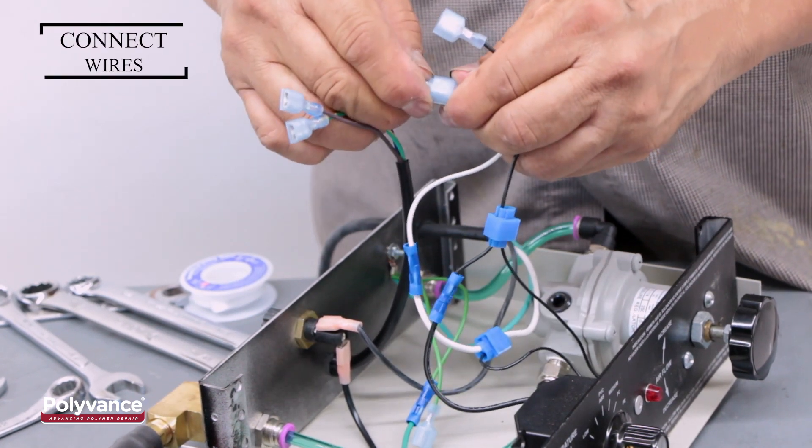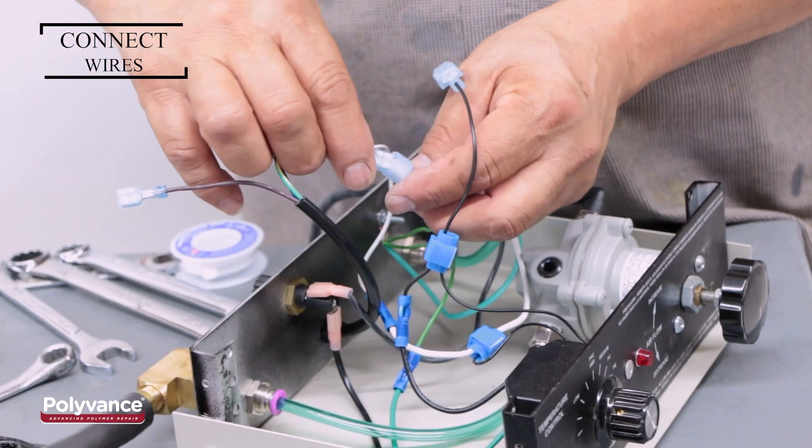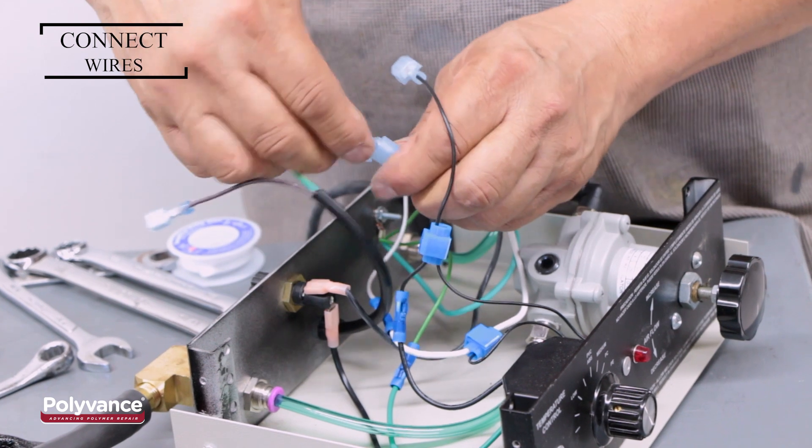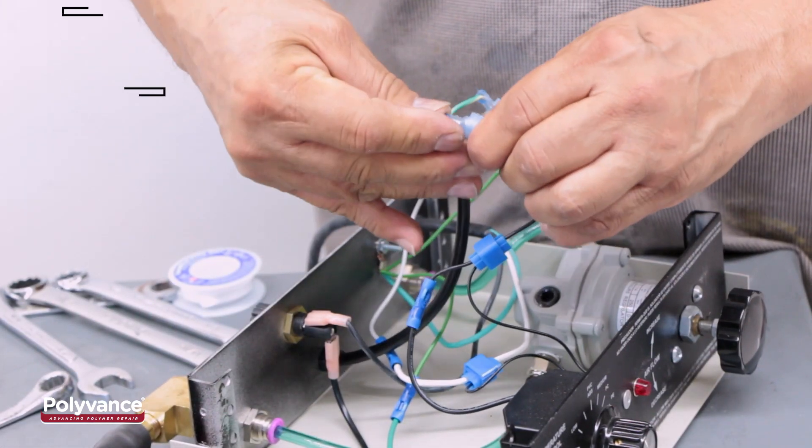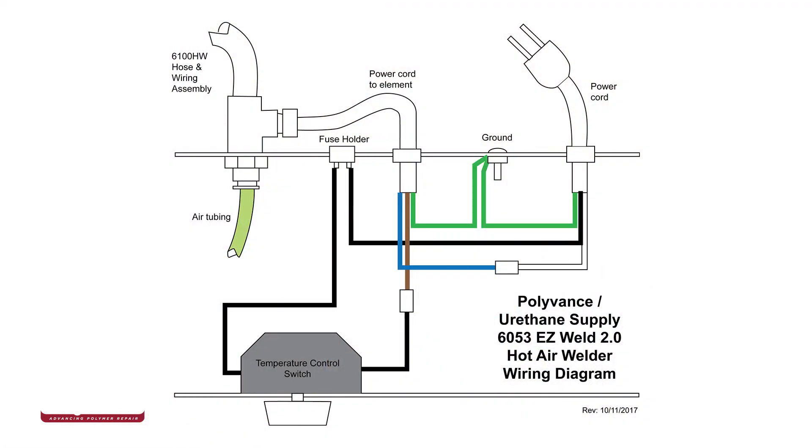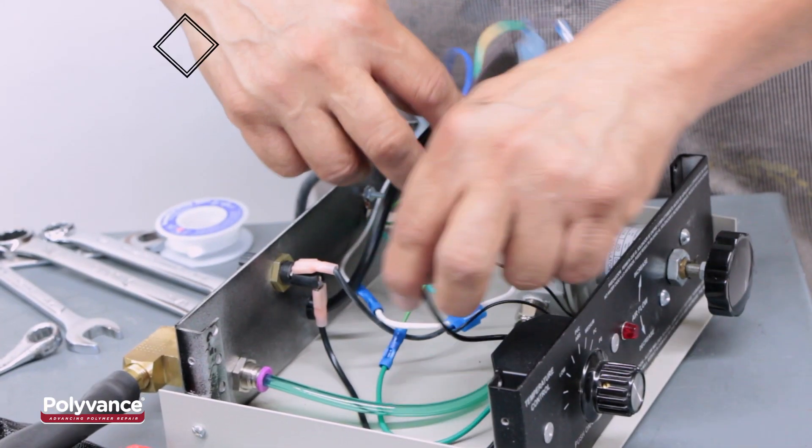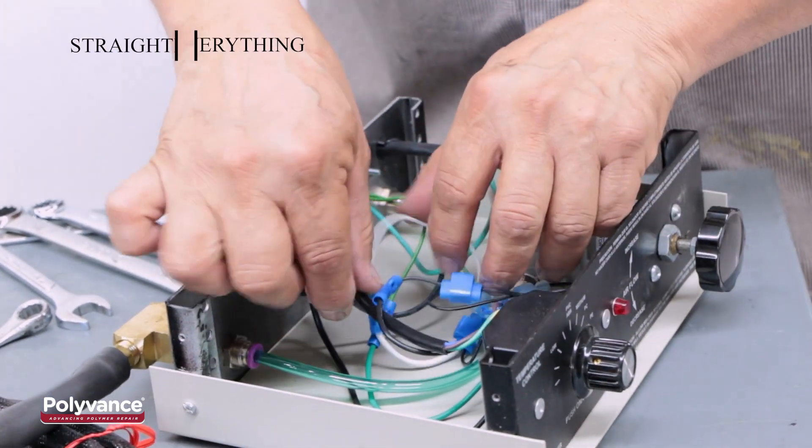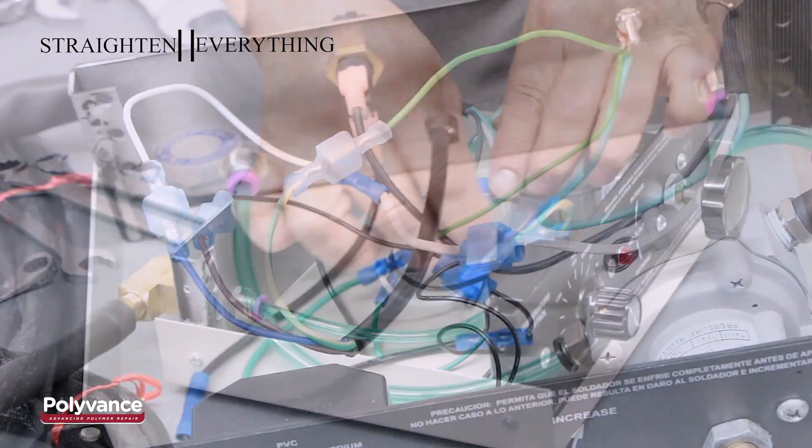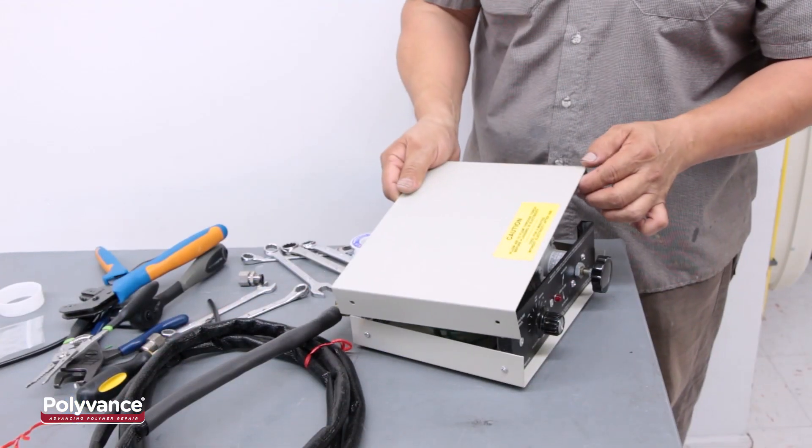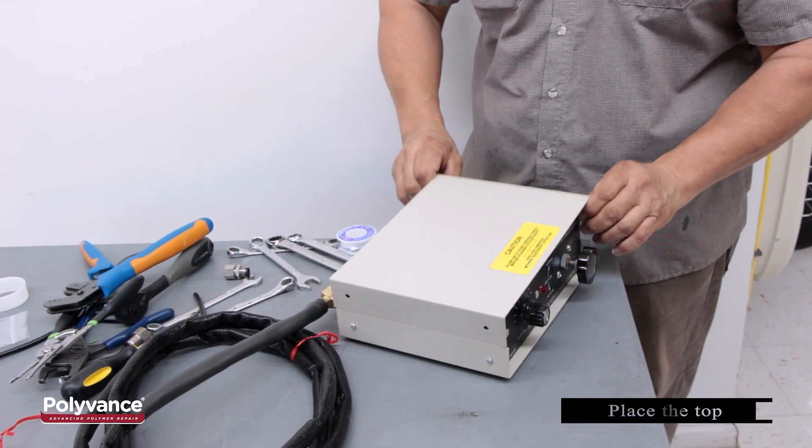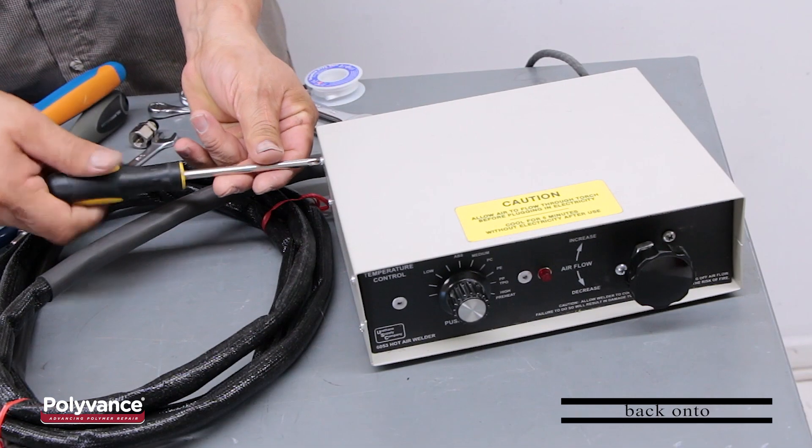Secure the blue wire to the white wire, the green wire to the green wire, and the brown wire to the black wire, as shown in this wiring diagram. Place everything neatly back inside the welder. Screw the top panel back onto the welder.